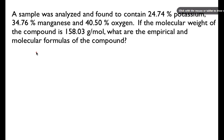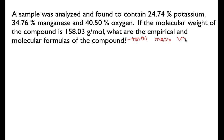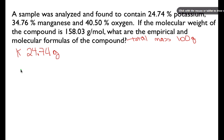We have percent composition data, and this question is very similar to when you're given mass data and want to find the empirical and molecular formula. The one little trick that will make your life a lot easier is to assume that the total mass of the sample is 100 grams. If the total mass is 100 grams and 24.74% of it is potassium, then we know we have 24.74 grams of potassium. We can just drop the percent and convert directly to grams.